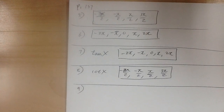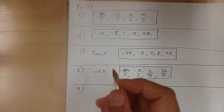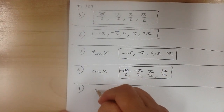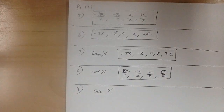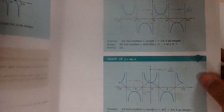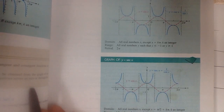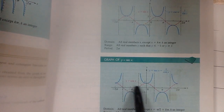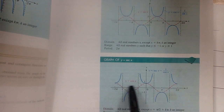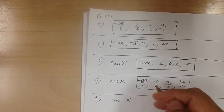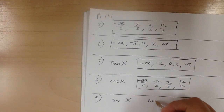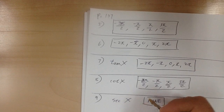For number 9, secant of x — looking at the secant graph, it doesn't touch the x-axis at all, so there is no x-intercept. The answer is none.